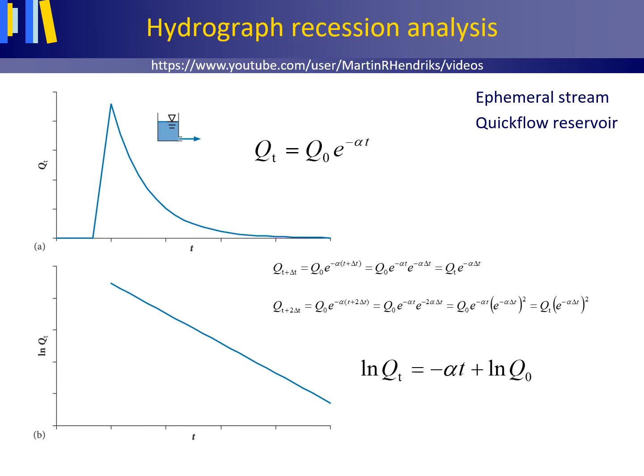This sheet shows a hydrograph of heavy rain on a wadi — a usually dry riverbed in a semi-arid climate, with the exception of periods during and shortly after heavy rainfall. A wadi is thus a type of ephemeral stream, and its discharge is made up solely of quick flow. For an ephemeral stream, the recession curve can conceptually be interpreted as outflow from a quick flow reservoir.